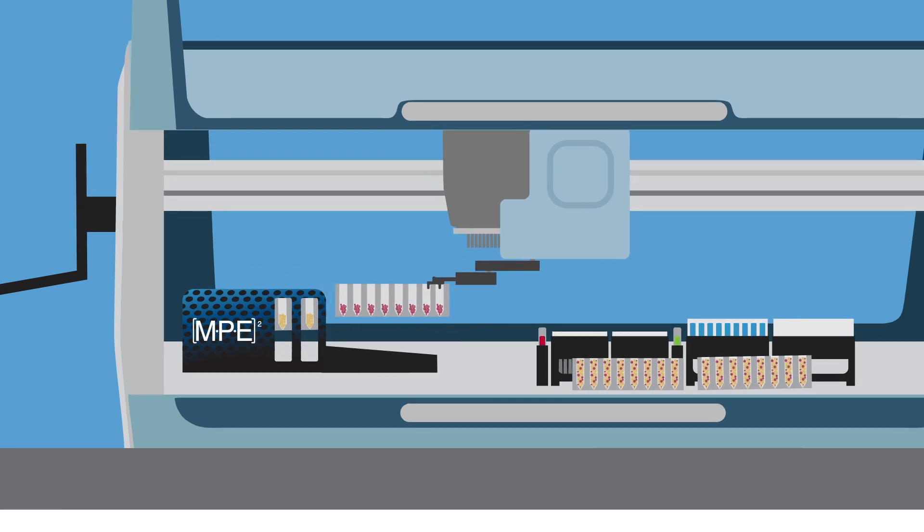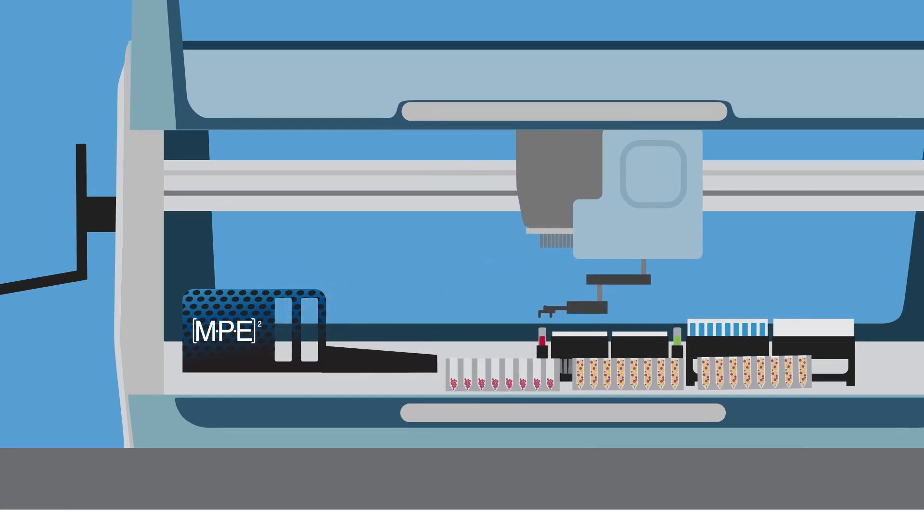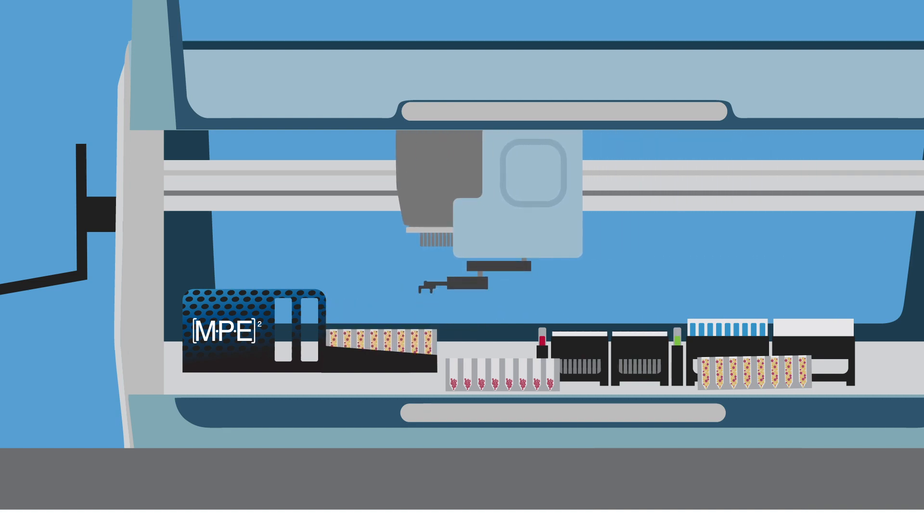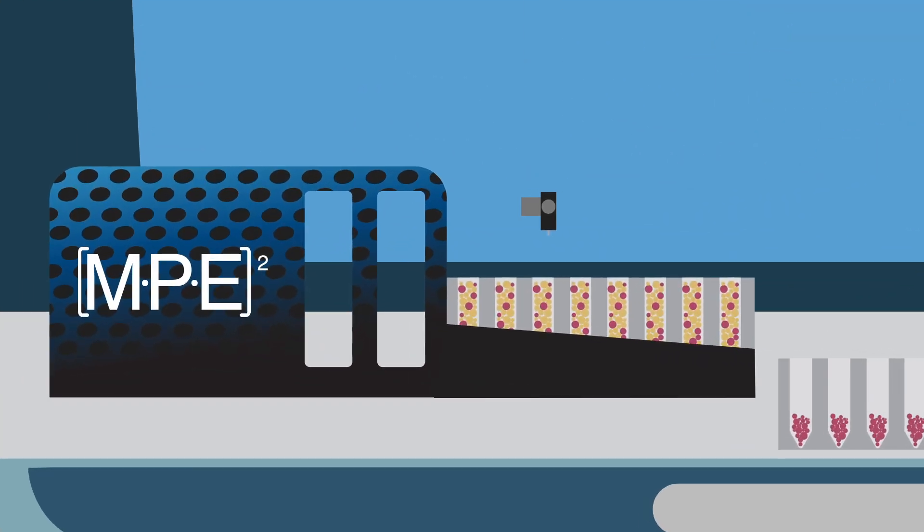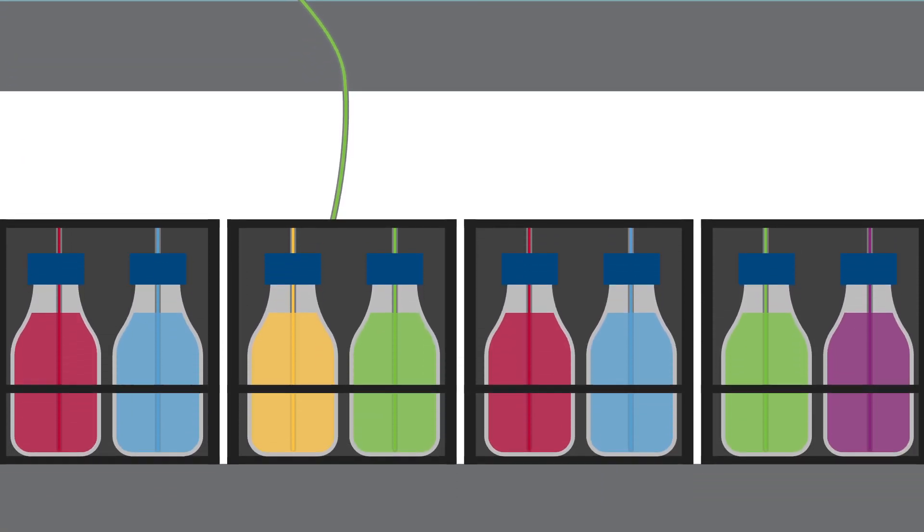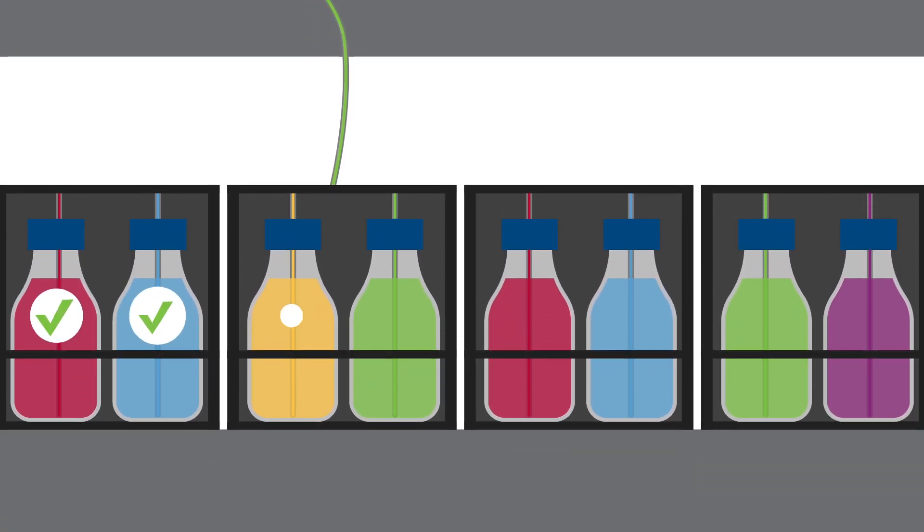The MPE2 has other accessories that can do even more for Christine. The reagent dispenser can add large volumes of up to 17 different liquids to her plates on the fly. Bottles which are stocked with fluid to keep the MPE2 well supplied are constantly monitored, so Christine will never have to worry about running out of liquid mid-run.